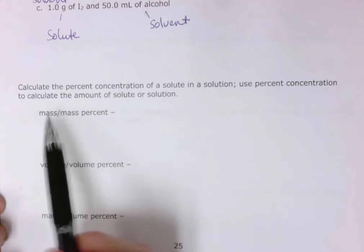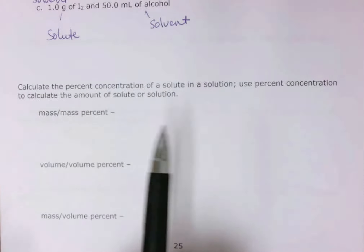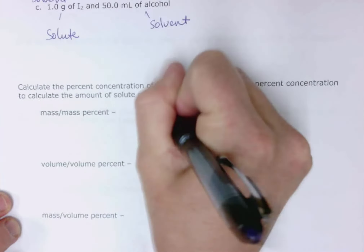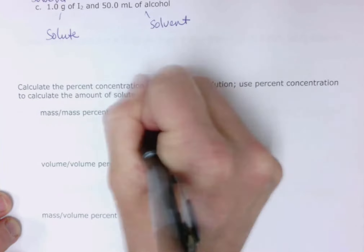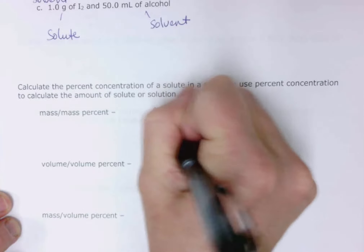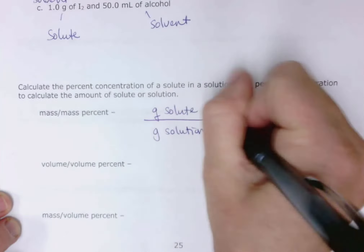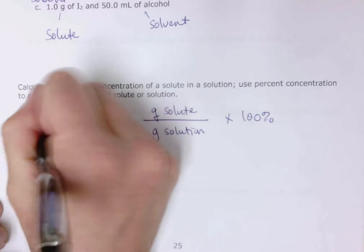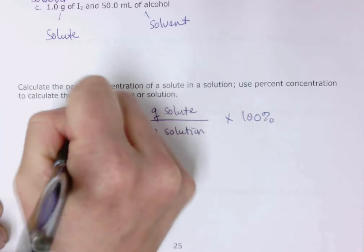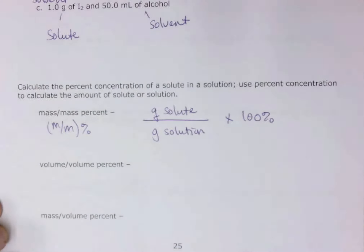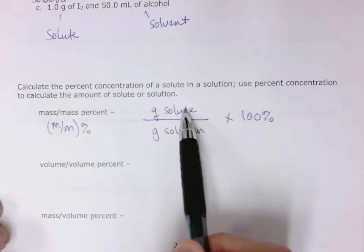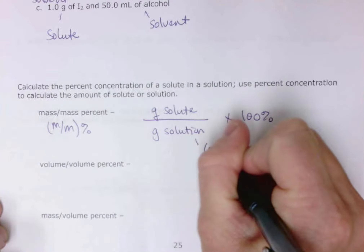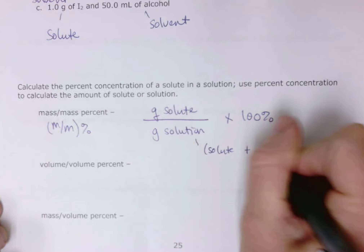The first type of concentration is mass/mass percent, which is grams of solute over grams of solution times 100. It can be abbreviated as (m/m)%. The next is volume/volume percent, which is milliliters of solute over milliliters of solution times 100, abbreviated V/V%. Keep in mind that the solution equals solute plus solvent.